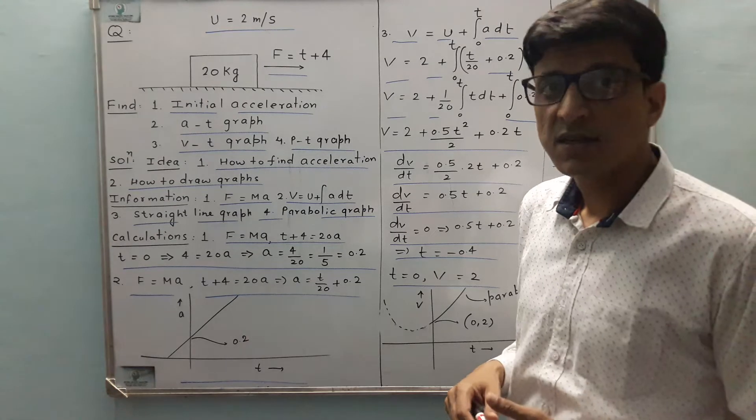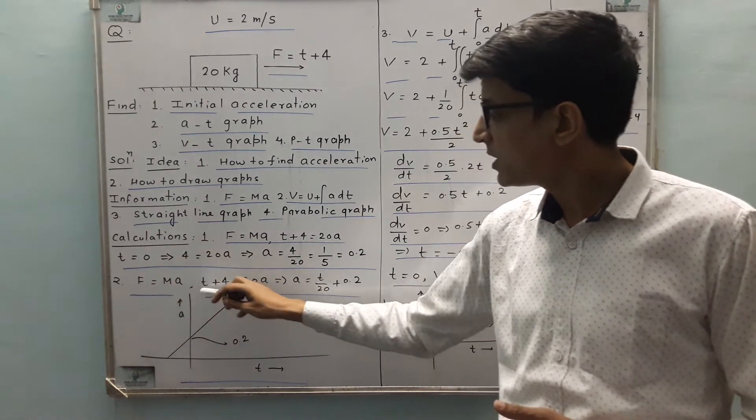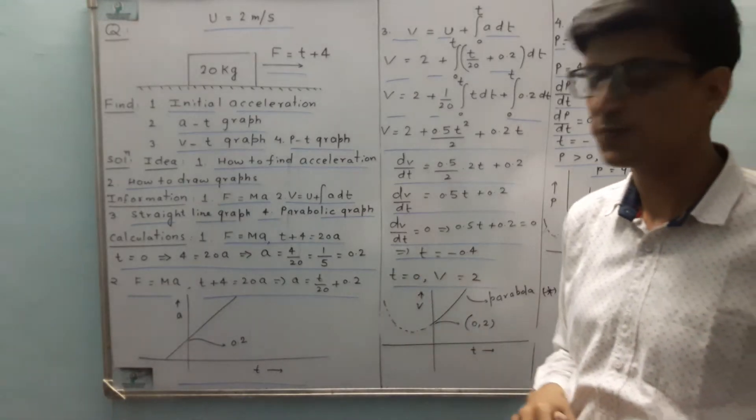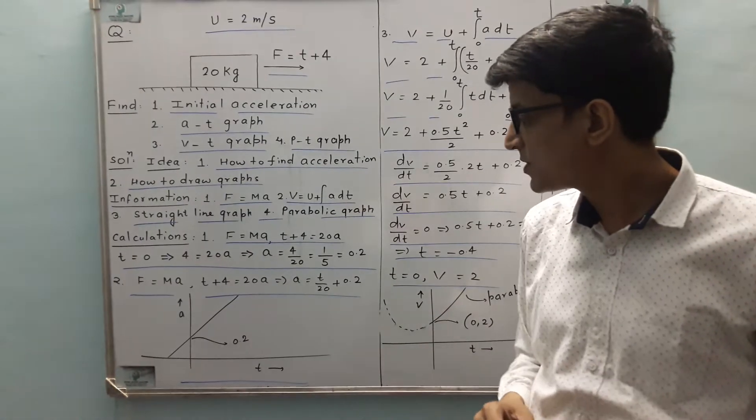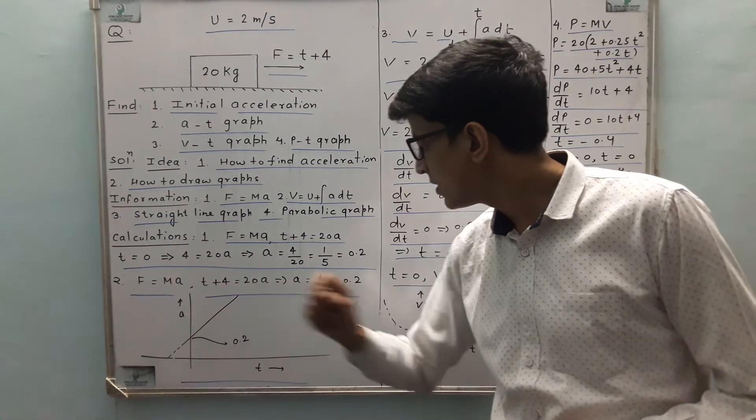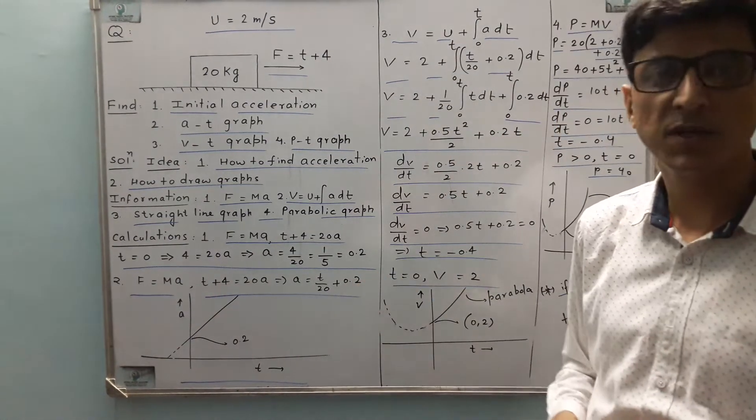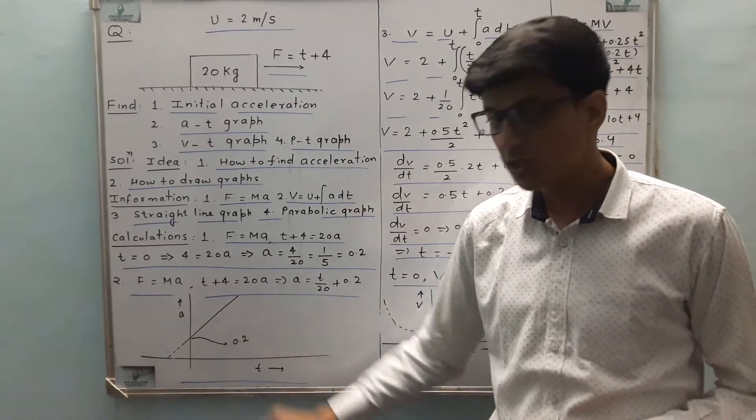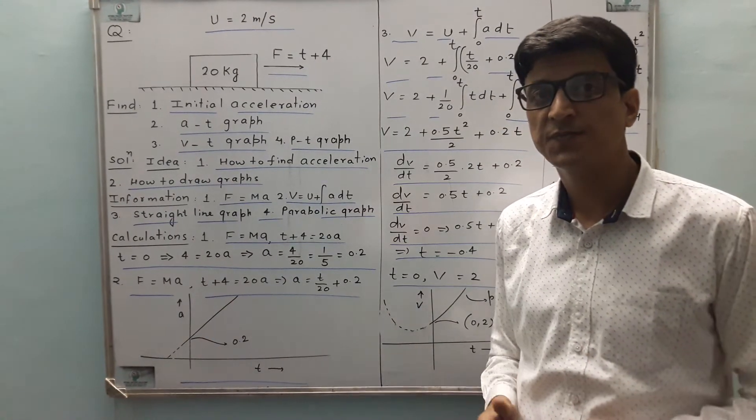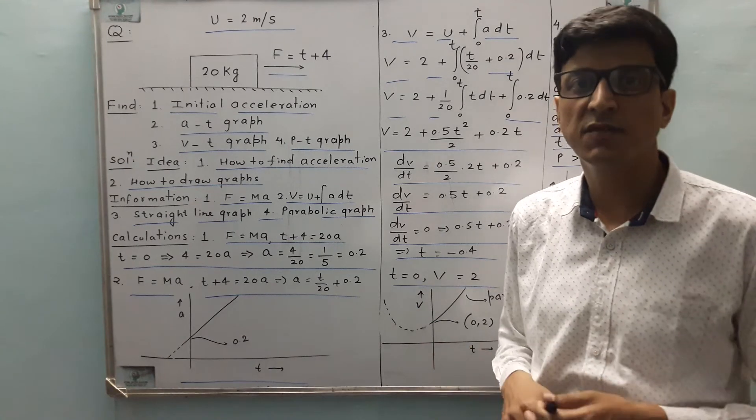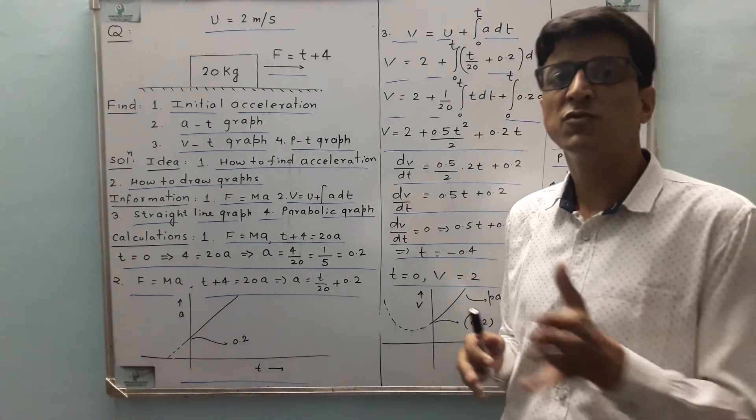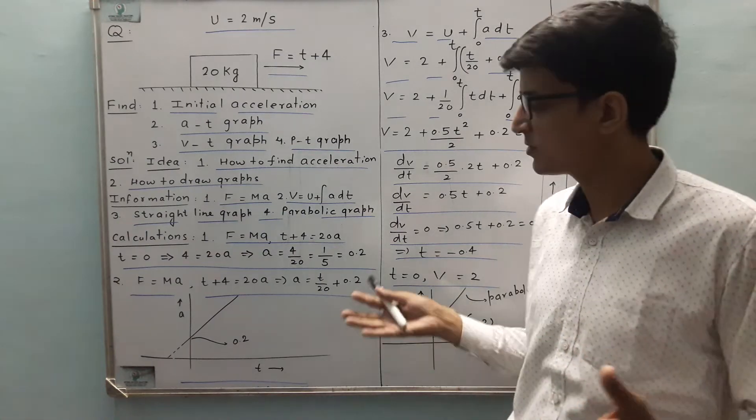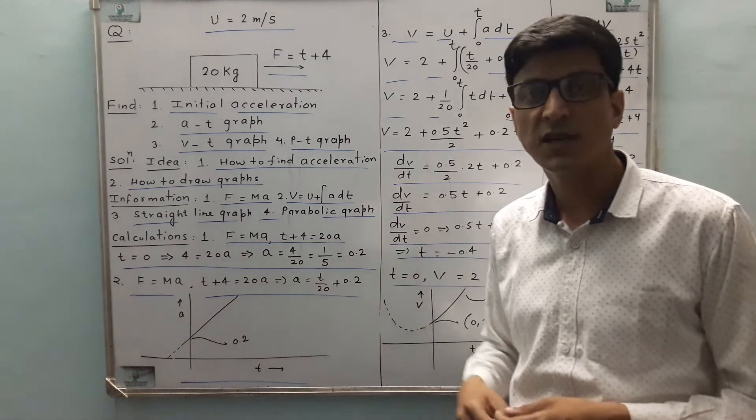Let's find instantaneous acceleration. F equals ma, t plus 4 equals 20a. That gives you a equals t by 20 plus 4 by 20, which is 0.2. We know that it's the equation of a straight line having positive slope and intercept 0.2. So that will be the shape of the graph. I have drawn this graph as dotted because time is not negative. It's possible to give a certain reference, but we assume that time moves forward and it's not possible to revert it back.